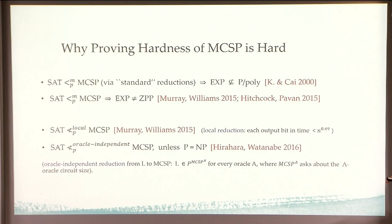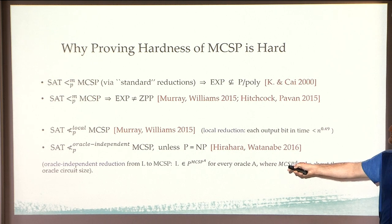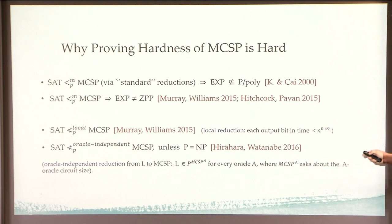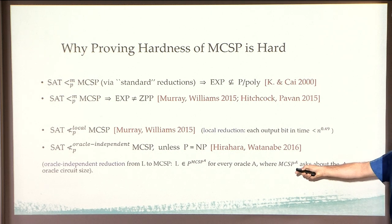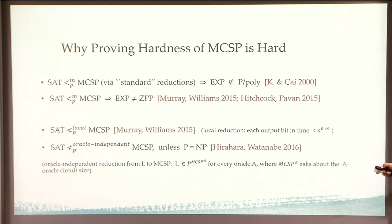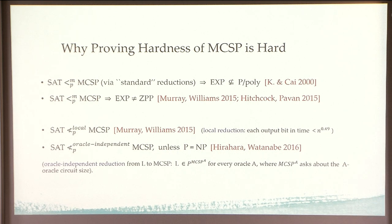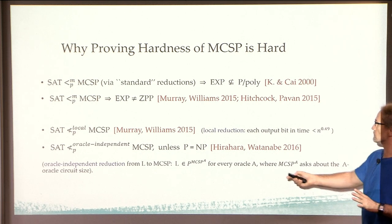Naive attempts to reduce SAT to MCSP show that you need some kind of lower bounds. If you weaken the requirement on your reduction, you still need some kind of lower bounds to prove. And if you weaken the reduction a lot, you can prove that those reductions will not work — but it still leaves quite a bit of room.